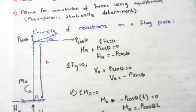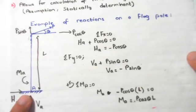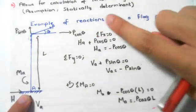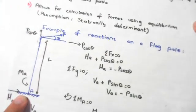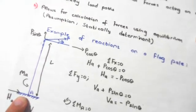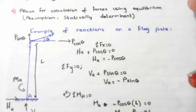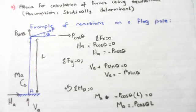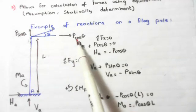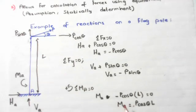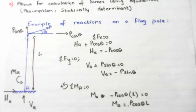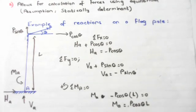So we do the sum of moments about A: MA minus P cos theta times L equals zero. The P cos theta term is negative because if we fix the support and rotate in the direction of that force, the rotation is clockwise — and clockwise moments are negative by our sign convention. Solving this, we find MA = P cos theta × L. This is how we worked out the reaction forces for the flagpole using equilibrium.